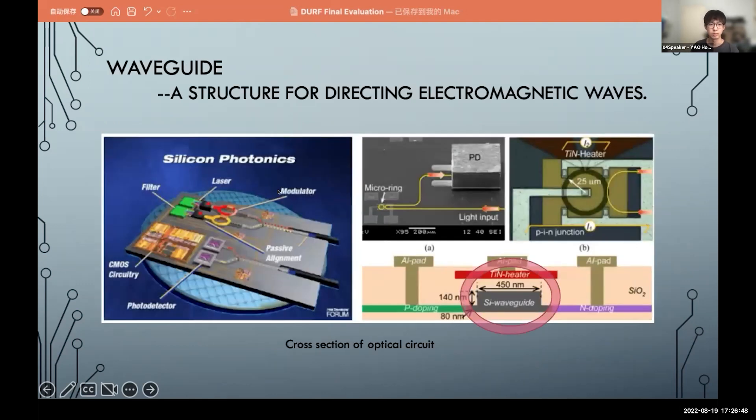And here is the silicon photonics chip. These two parts are waveguides, and here is a cross-section of the waveguide. The waveguide structure is for directing electromagnetic waves, and we focused on this part.